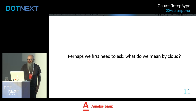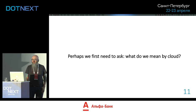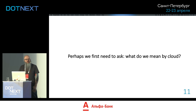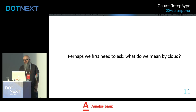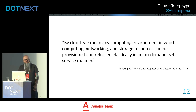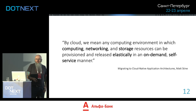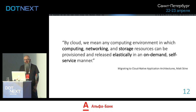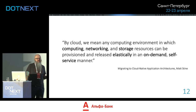A common definition we get is it's somebody else's machine, or it's billed every month. Those are both true. But the more technical definition is that cloud is elastic, on-demand, and self-service. What we mean by that is when I want more compute instances, I just ask for them and I get them there and then.